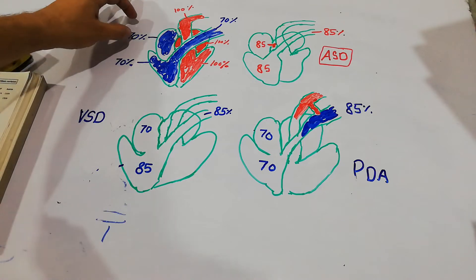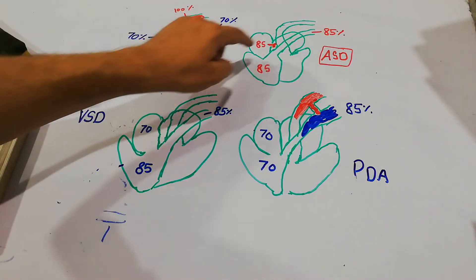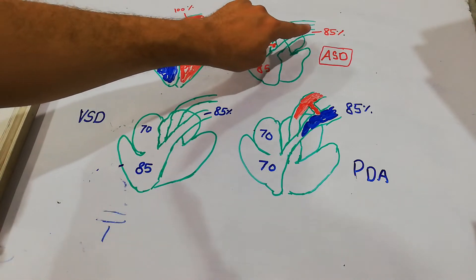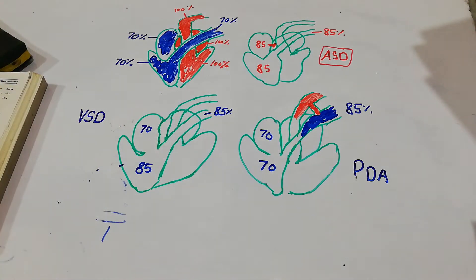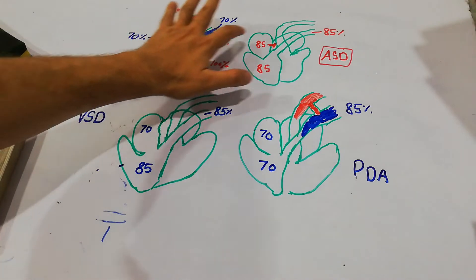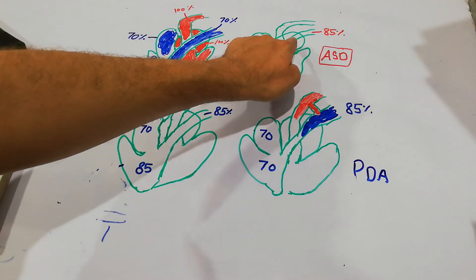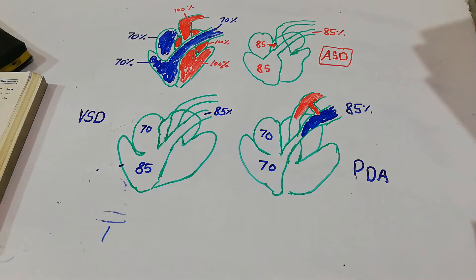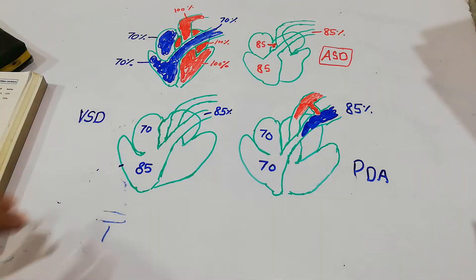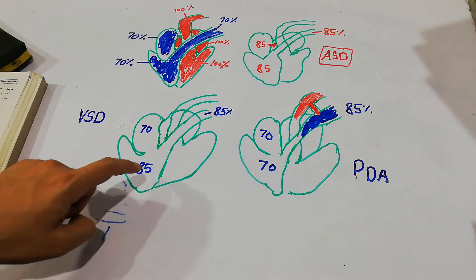The same blood goes into the pulmonary artery, so the saturation of blood in the pulmonary artery is also 85 percent. In ASD, because the pressure on the left atrium is high, blood from the left atrium goes into the right atrium and increases the oxygen saturation in the right atrium and upward. Now, what happens in VSD — ventricular septal defect?